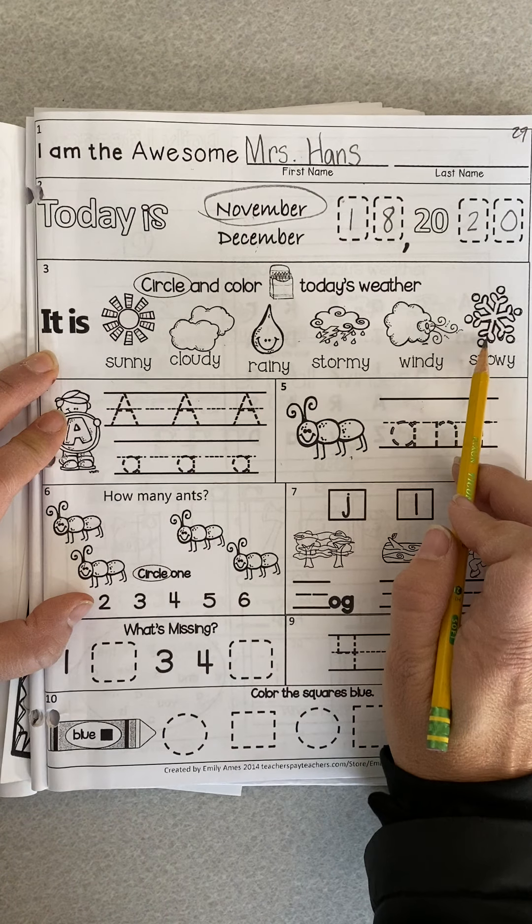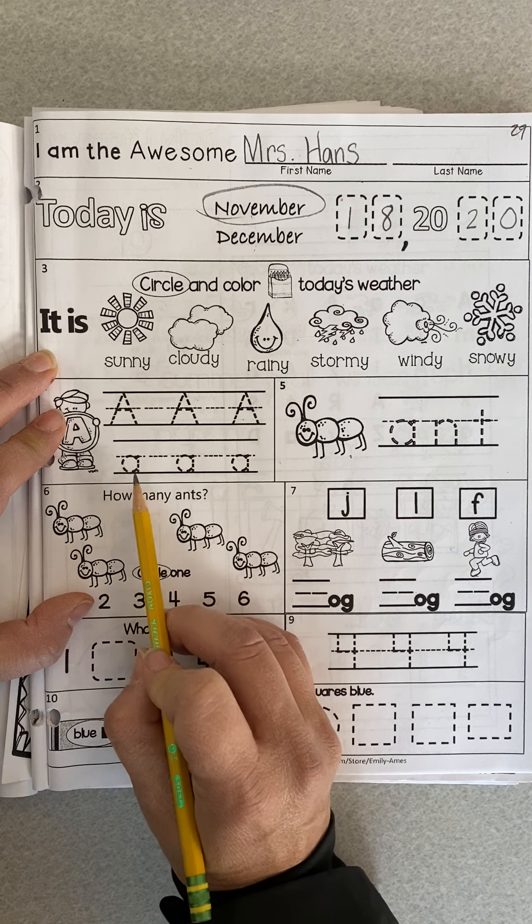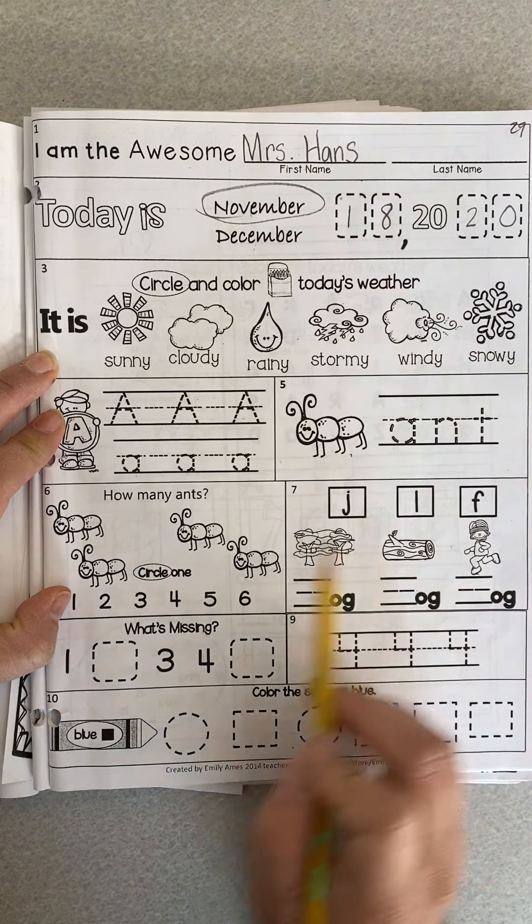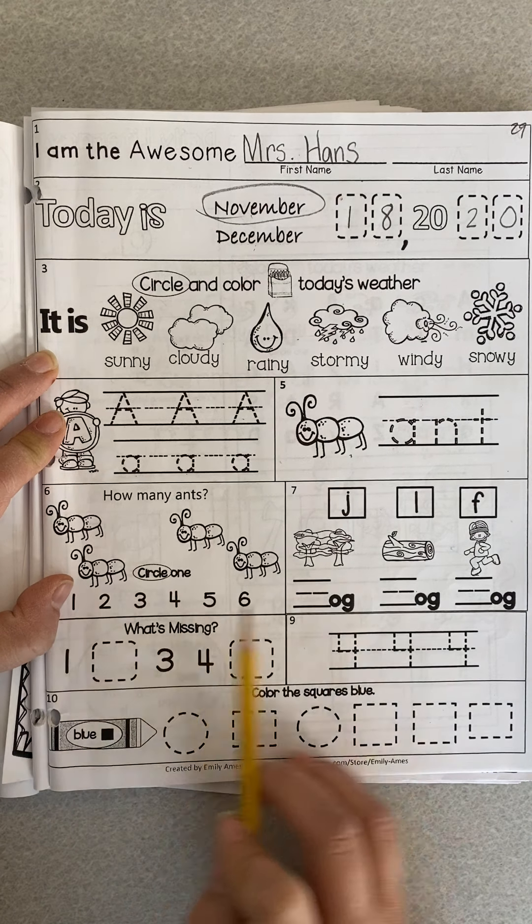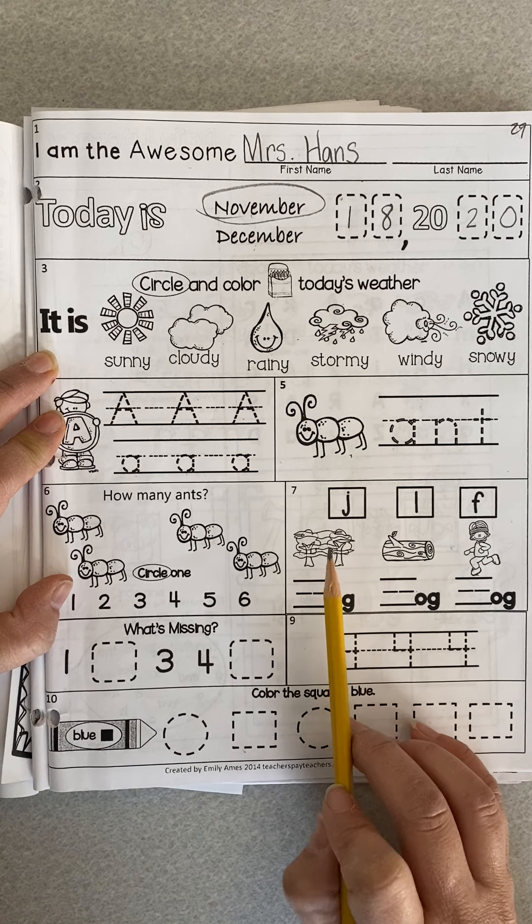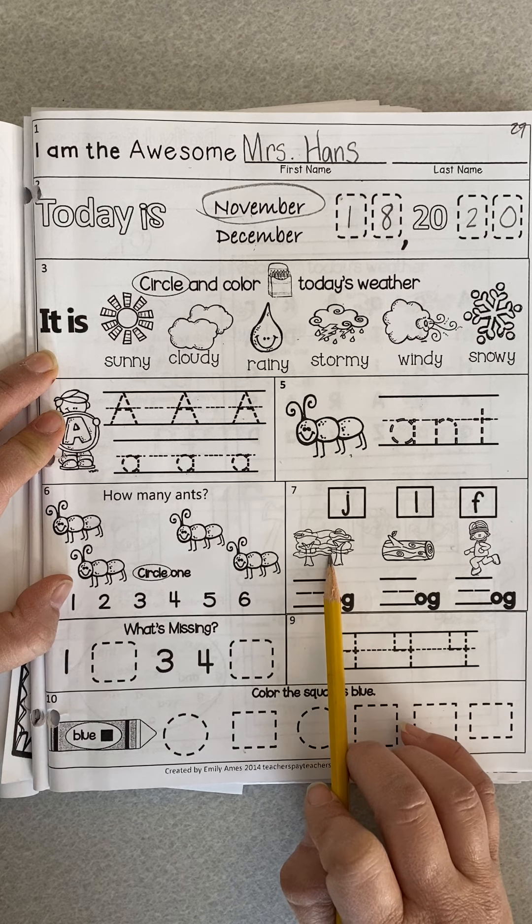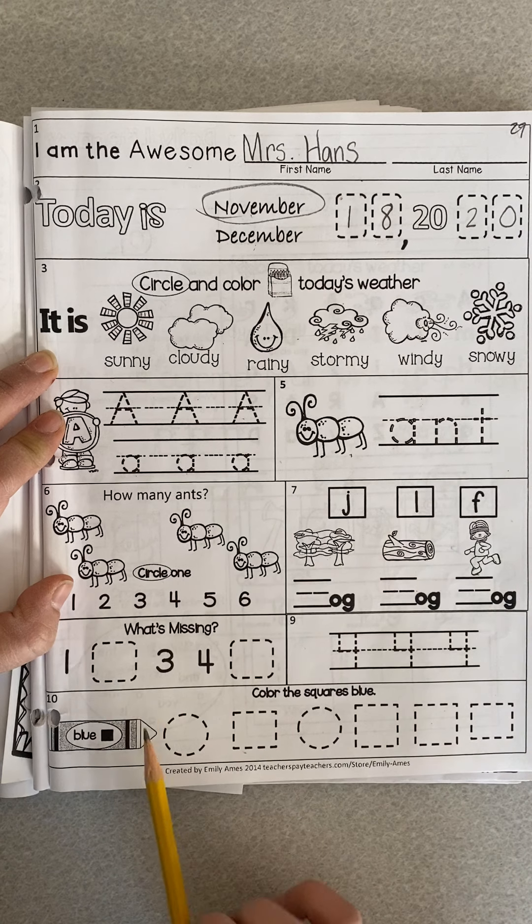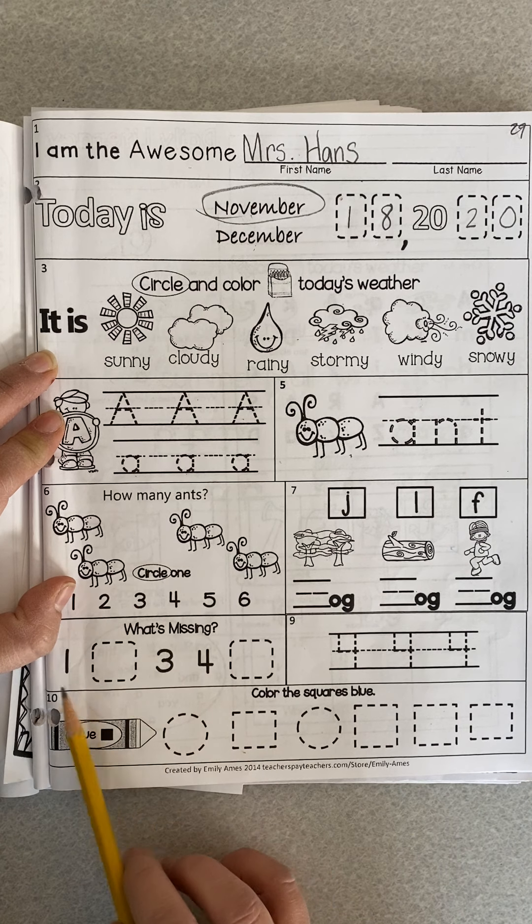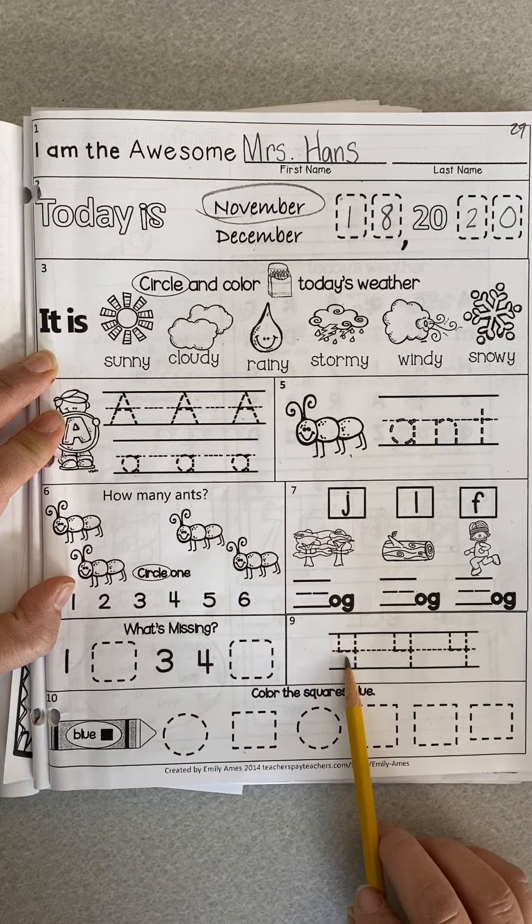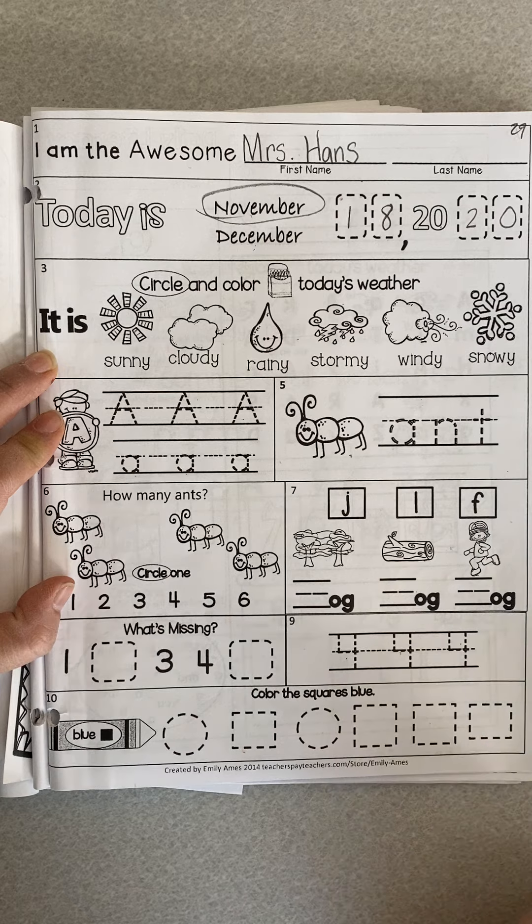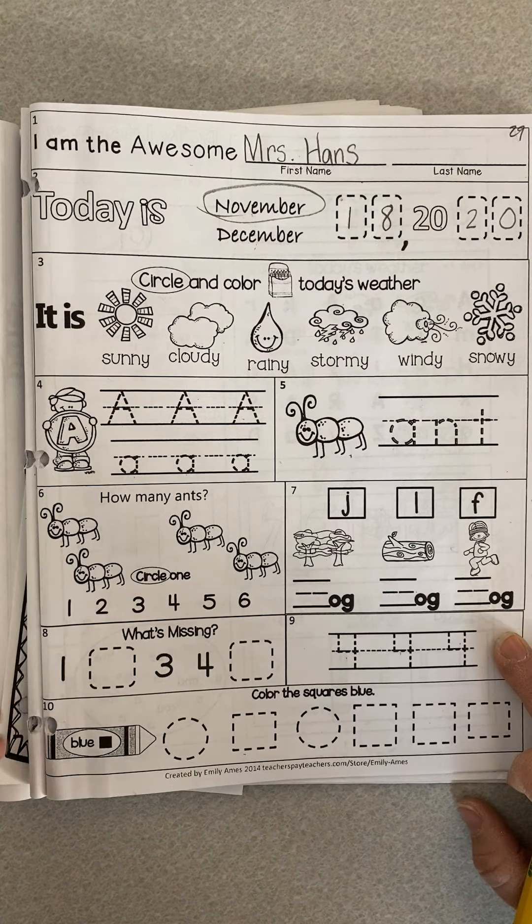You're going to circle the weather. Trace your uppercase A's and lowercase A's. Trace the word ant. Count how many ants and circle the correct number. You're going to look at these letters and figure out which one goes here. This is fog, log, jog. Write the correct letter underneath. Write the number that is missing, counting in order. Trace your number fours and color the squares blue. Don't get tricked by the rectangles. And that's it for morning work.